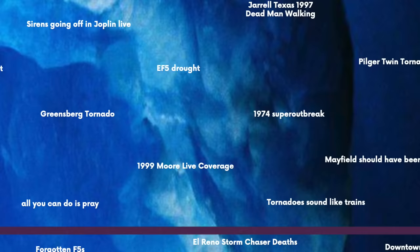Tornadoes sound like trains. The idea is that tornadoes sound like freight trains — a low rumble that people describe as exactly what tornadoes sound like off in the distance as they approach. Very eerie, especially if you live in Dixie Alley where you can't see them coming, especially at night.